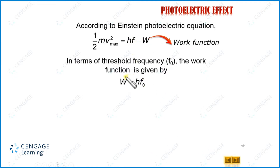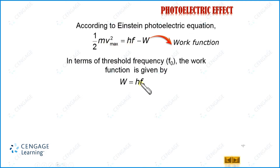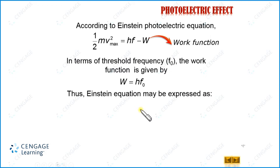We can substitute the value of W in this equation — this is the Einstein equation. So we can write: (1/2)mv²_max = HF − HF₀. Taking H as common, this equation becomes: (1/2)mv²_max = H(F − F₀), where F₀ is the threshold frequency.